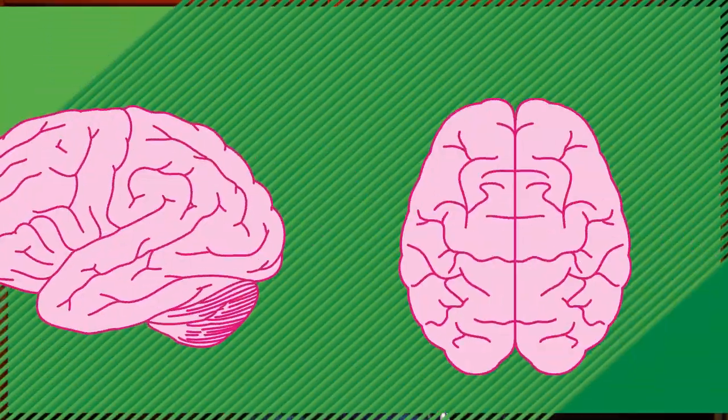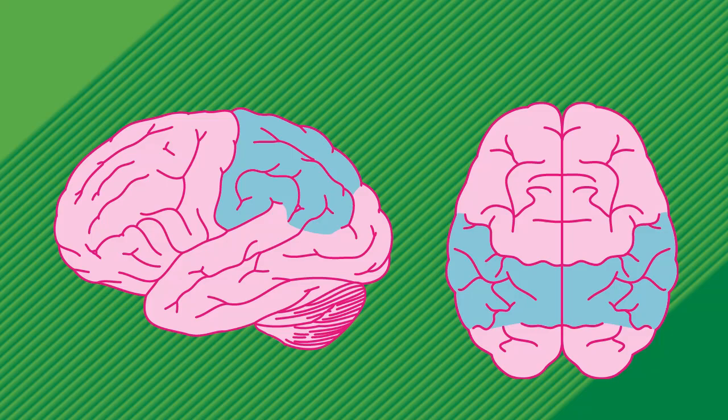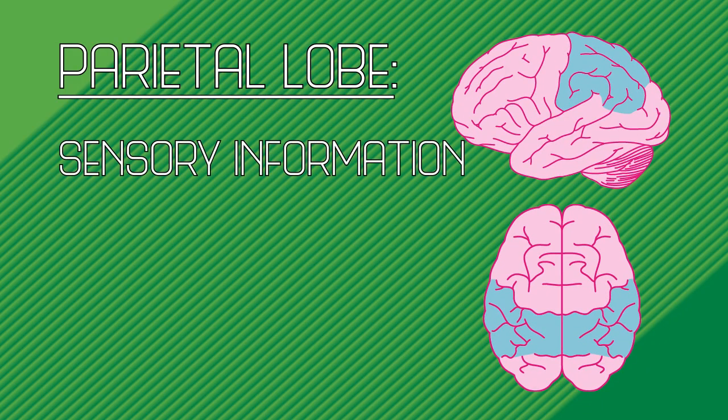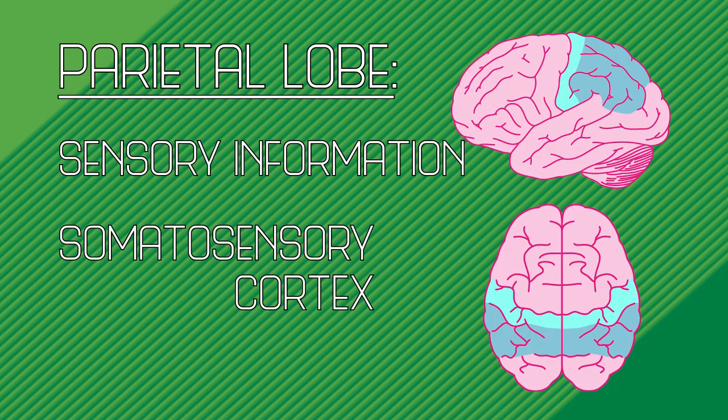Above and in front of the occipital lobe, we have the parietal lobe — the key to processing sensory information from your body. This narrow band on top of the parietal lobe is called the somatosensory cortex, and is responsible for processing your sense of touch — it's almost like a map of your body. The parietal lobe is also important for proprioception, your sixth sense — the sense of your body in space.